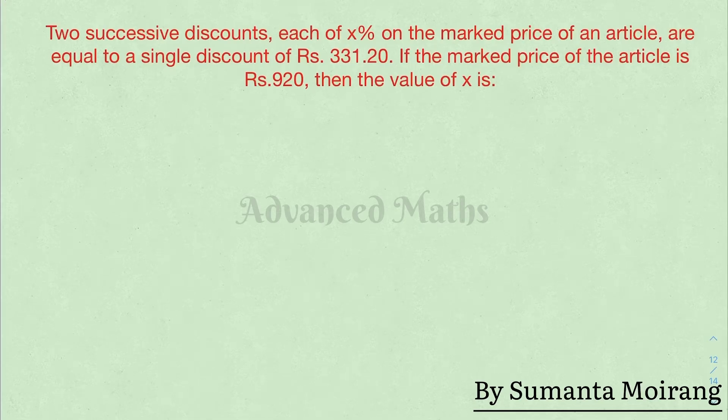Two successive discounts, each of x% on the marked price of an article, are equal to a single discount of Rs. 331.20. Two successive discounts are equal to Rs. 331.20.